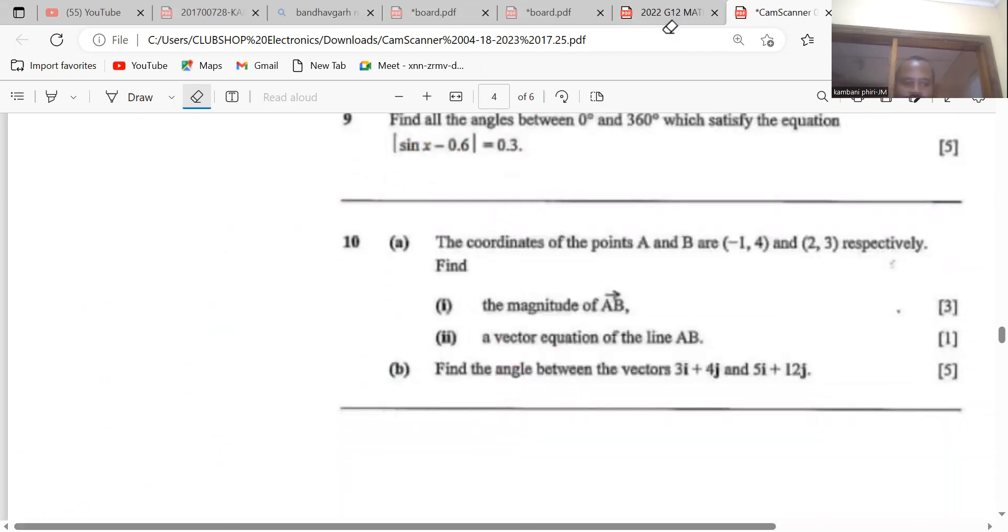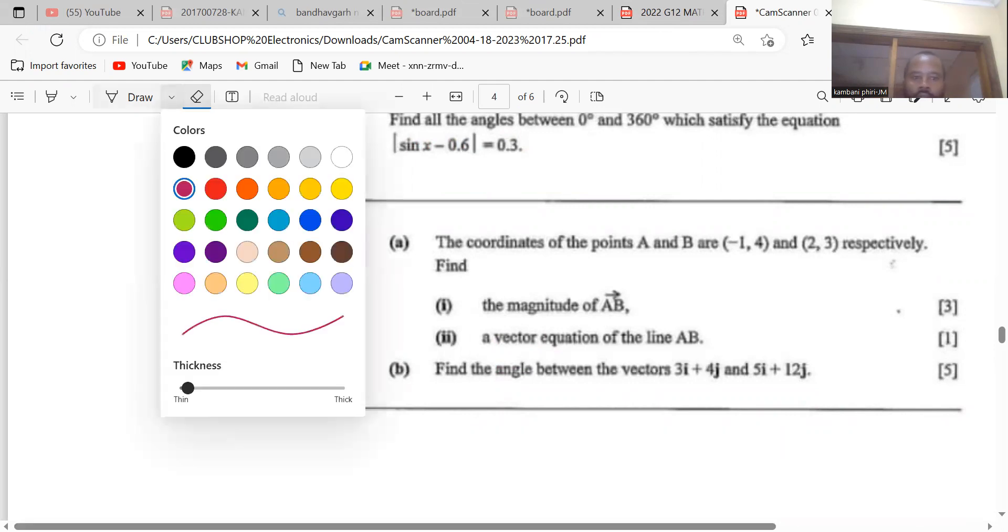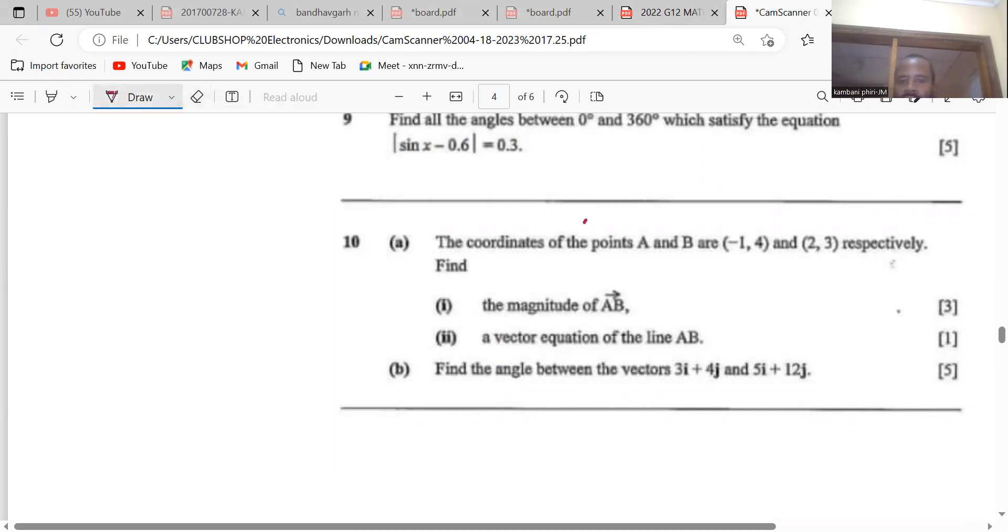The first question says the coordinates of points A and B are (-1, 4) and (2, 3) respectively. Number one, let's find the magnitude of AB. Now there are two methods: we can go direct or we can first find AB. So AB can be defined by AO plus OB.